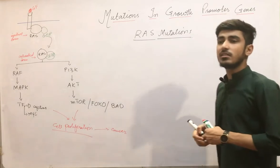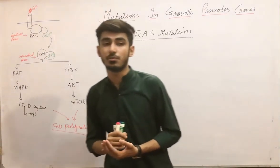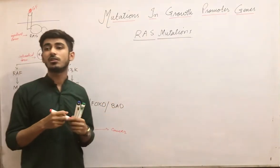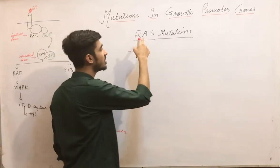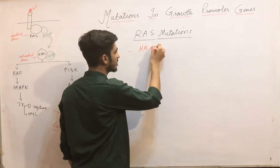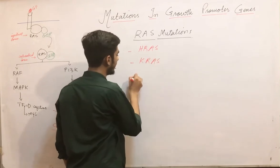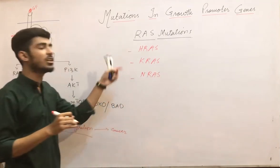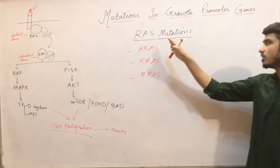RAS mutations are the most commonly mutated genes in human tumours. In humans, there are three types of RAS genes: H-RAS, K-RAS, and N-RAS. Their function is to carry out cell growth, cell cycle, and proliferation.